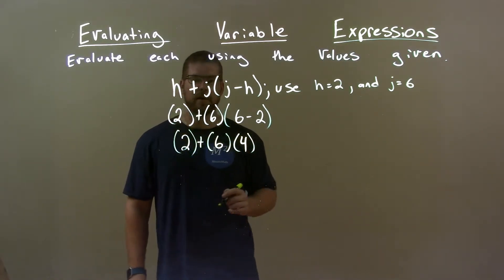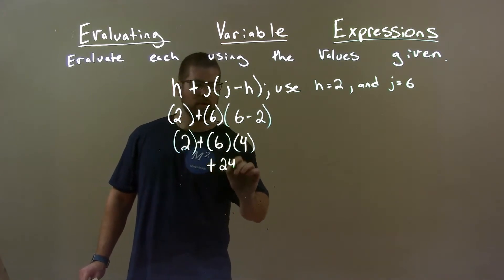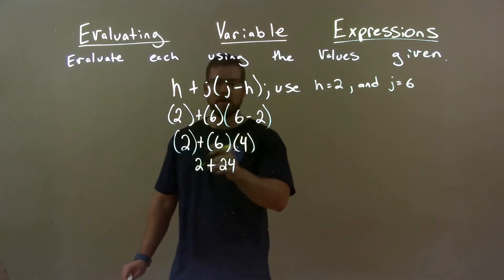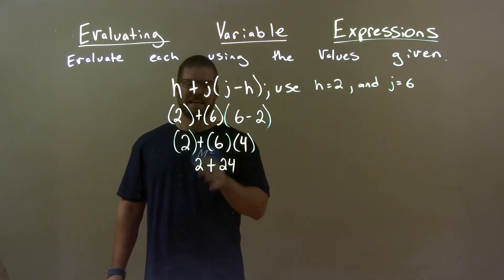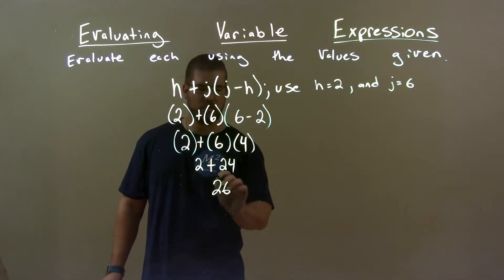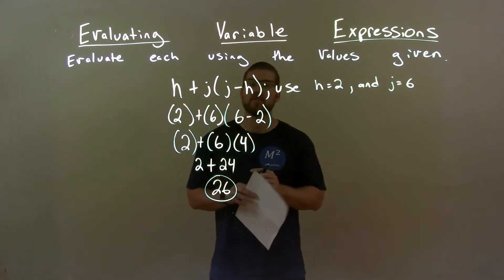Multiplication is going on here. 6 times 4 is 24. Bring down the 2. 2 plus 24 is 26. So our final answer here is just 26.